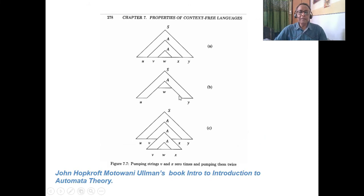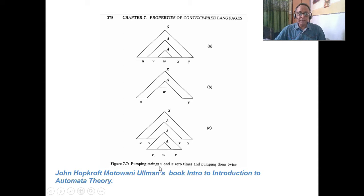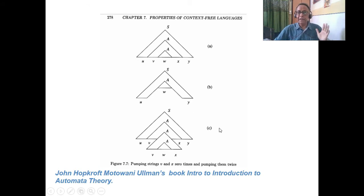Here we have pumping. This is the original string u v w x y — one pumping, no pumping, two pumping or three pumping. If I pump two times, it becomes u v v w x x y. These are all the telltale signs of a context-free grammar. This is pumping lemma 2.